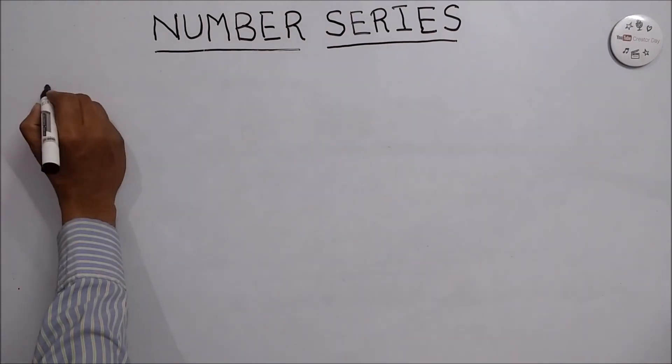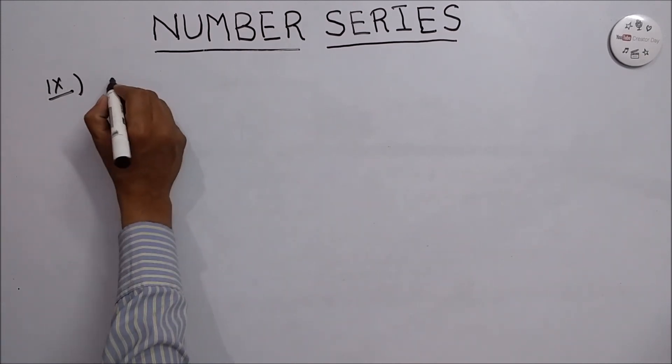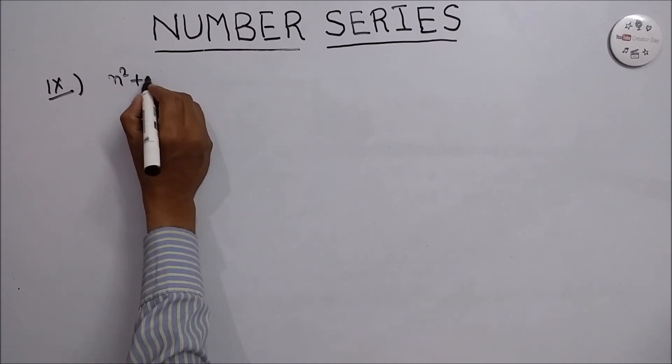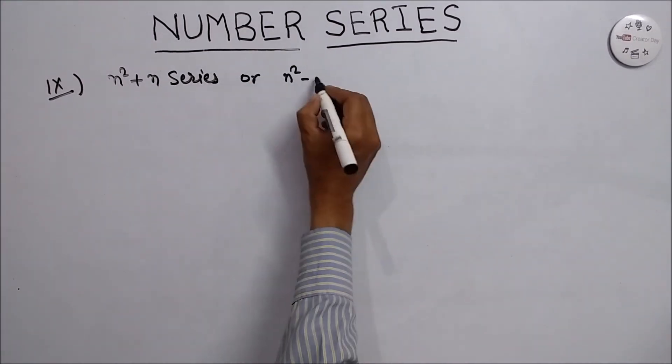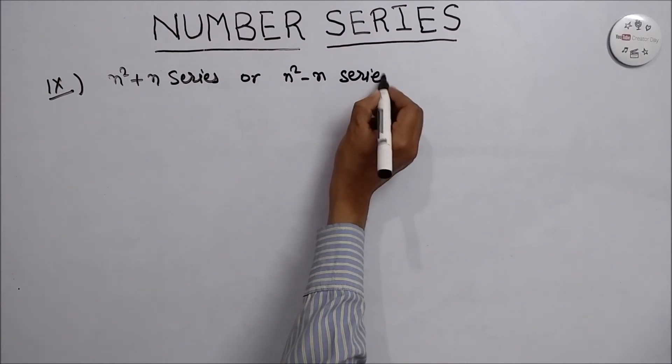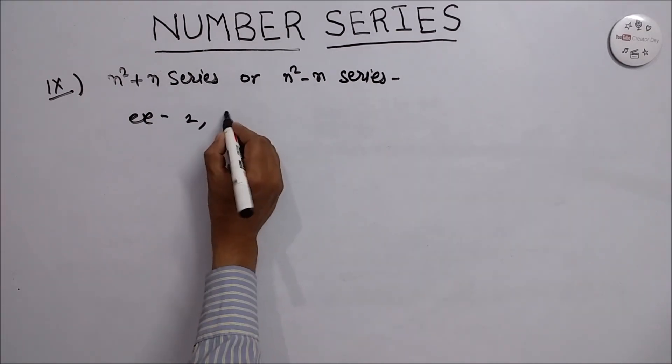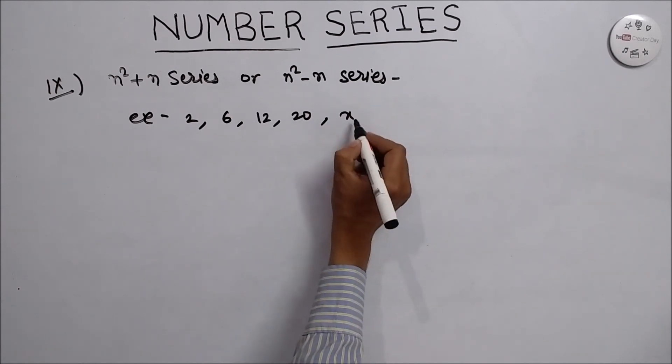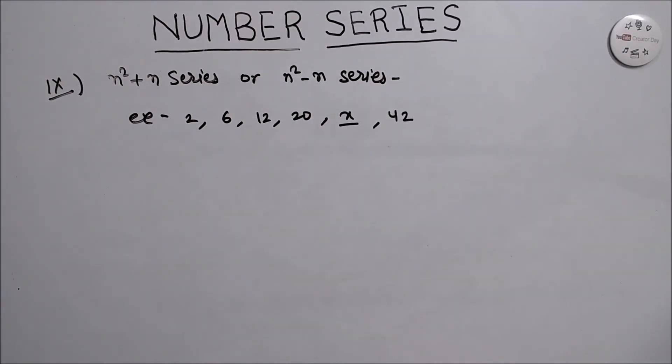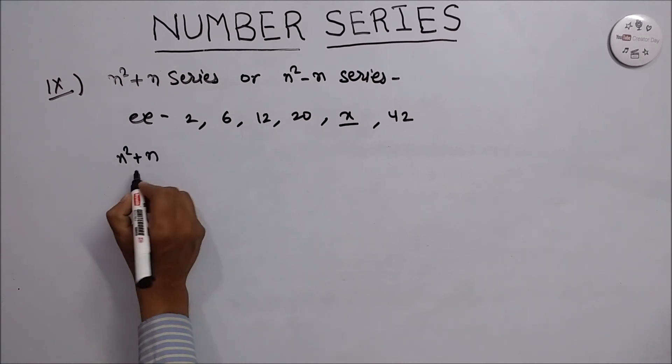Now we understand, or we now see the next type of series, that is n square plus n series, or you can say that n square minus n series. We take an example: 2, 6, 12, 20, x, and 42. First of all, we solve the series with this n square plus n formula.